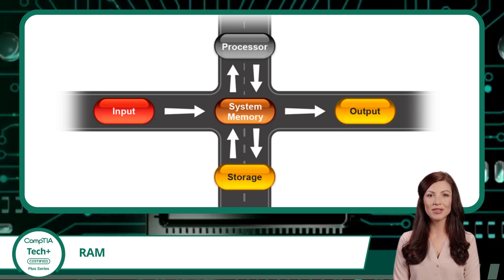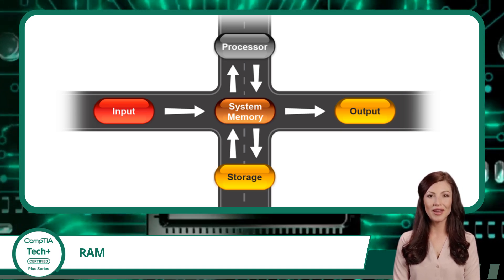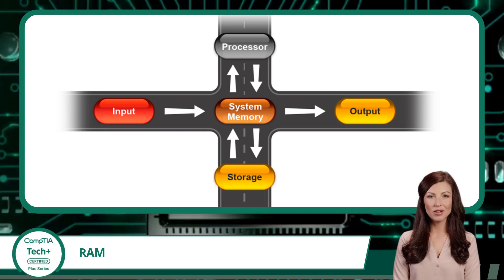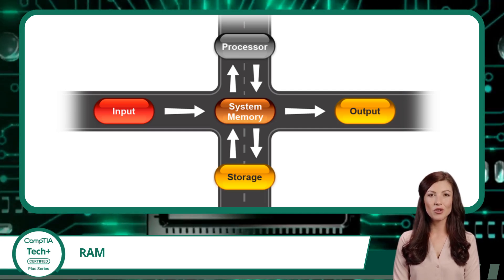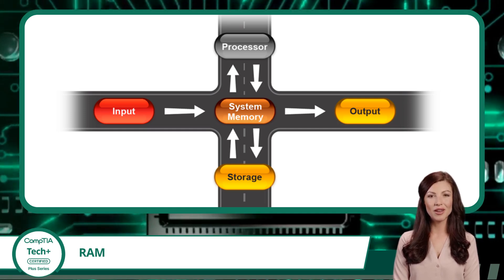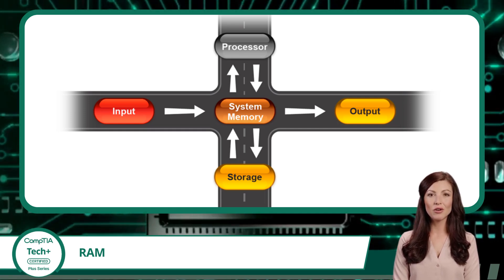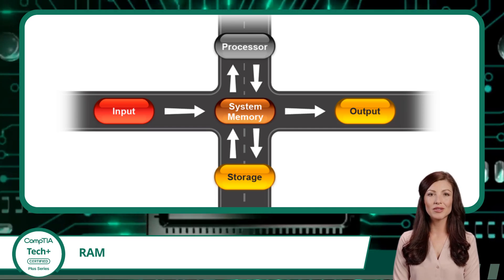When the processor needs to receive or output data, it can interact directly with the system memory, which allows for faster execution of instructions by the processor.